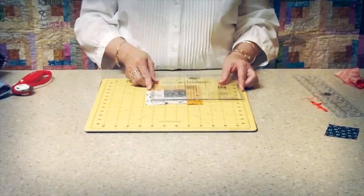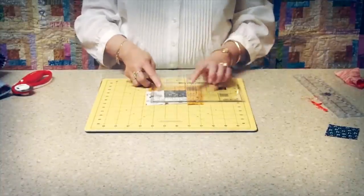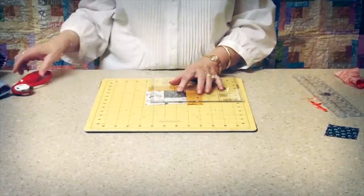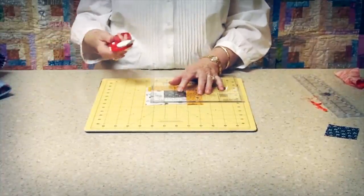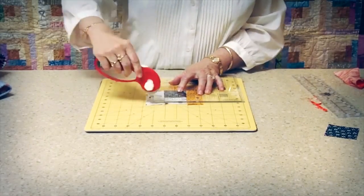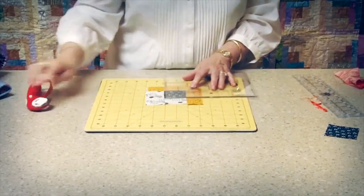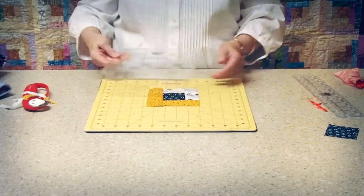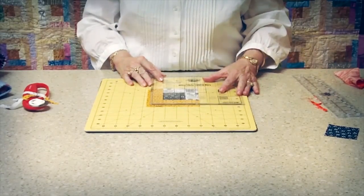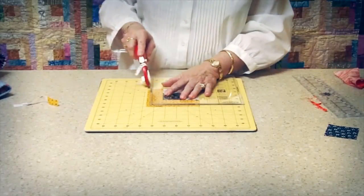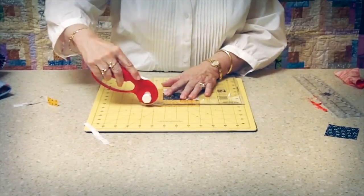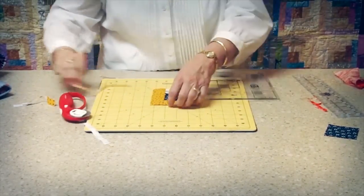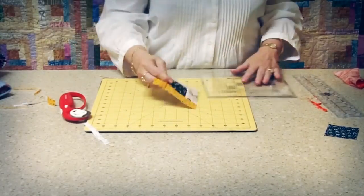Now I am going to use the outside marking on the trim tool and position it right over the center square of the quilt. So I am going to trim up and across. I am going to give my block a half turn and once again I am going to trim up and across. There you have it, my center of the block is trimmed.